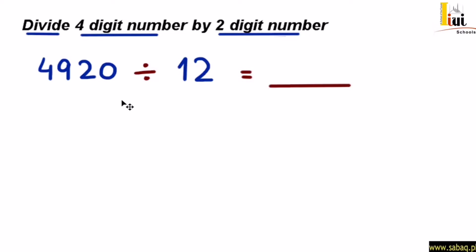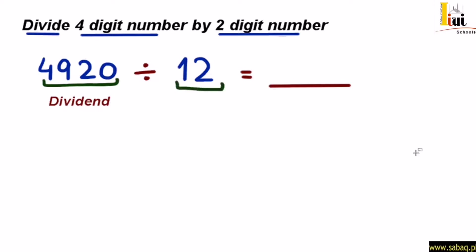अब हम देखते हैं कि इन दोनों numbers को किस तरह से divide करेंगे। जब हम numbers को divide करते हैं, तो ये जो पहला यानि सबसे बड़ा number होता है, इसे हम कहते हैं dividend। इस number को हमने divide करना है। और ये जो number है जो dividend को divide करेगा, उसे हम कहते हैं divisor। और इन दोनों को divide करने के बाद जो जवाब आता है, उसे हम कहते हैं quotient।